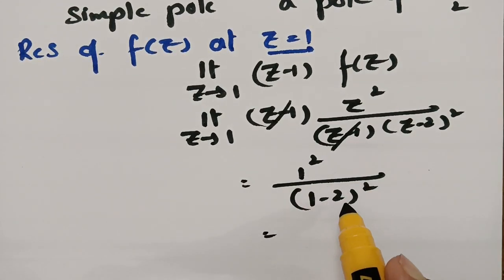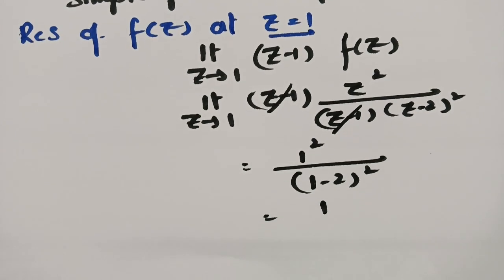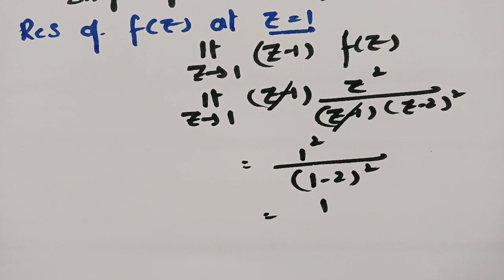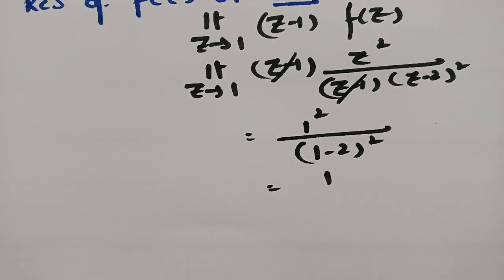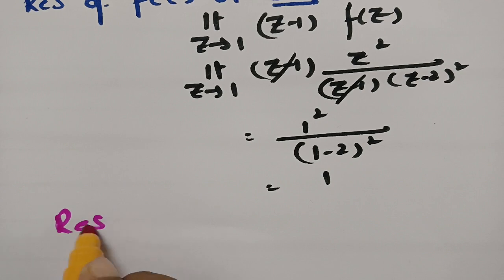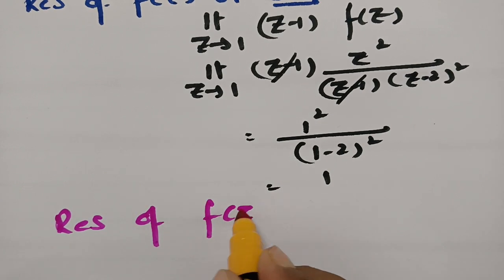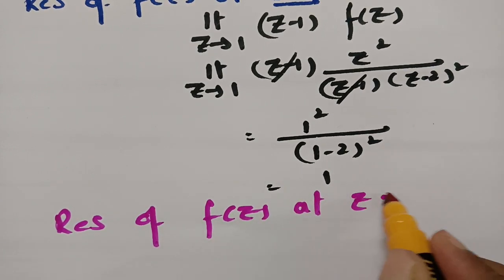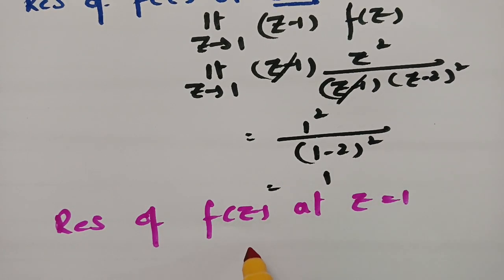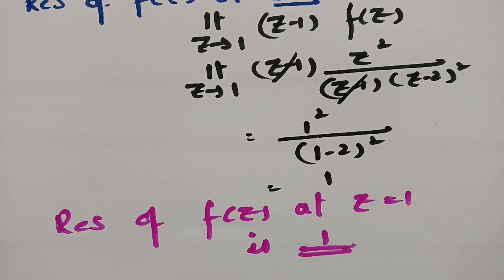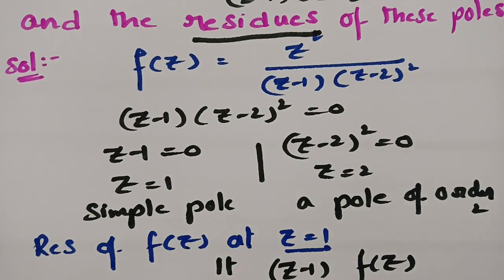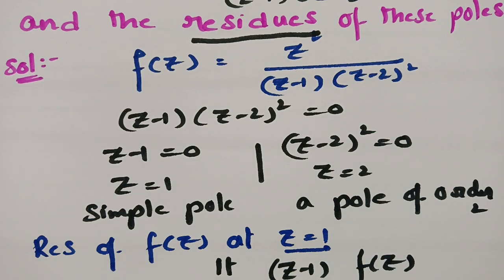Substituting z = 1: 1/(1-2)² = 1/1 = 1. Therefore, the residue of f(z) at the simple pole z = 1 is 1. Next, we address z = 2, which is a pole of order 2.